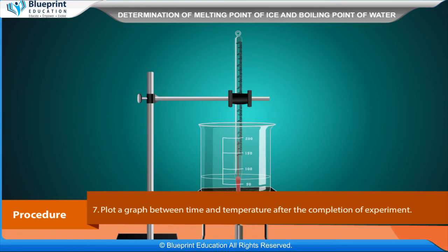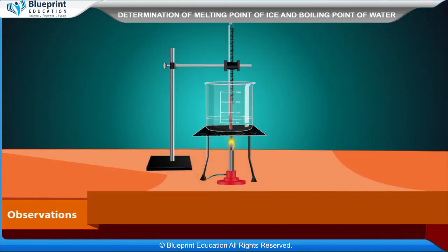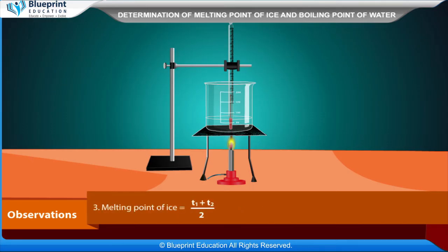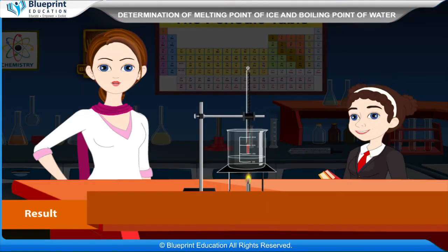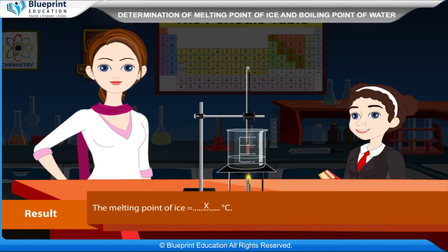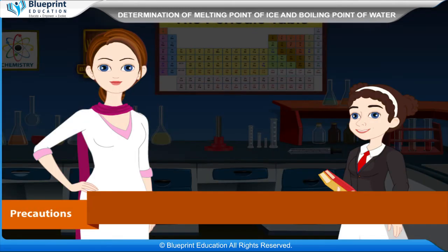Plot a graph between time and temperature after the completion of the experiment. Observation: temperature when ice starts melting is T1; temperature when ice completely melts is T2. The melting point of ice equals (T1 + T2) / 2. Result: the melting point of ice is equal to x degrees Celsius.